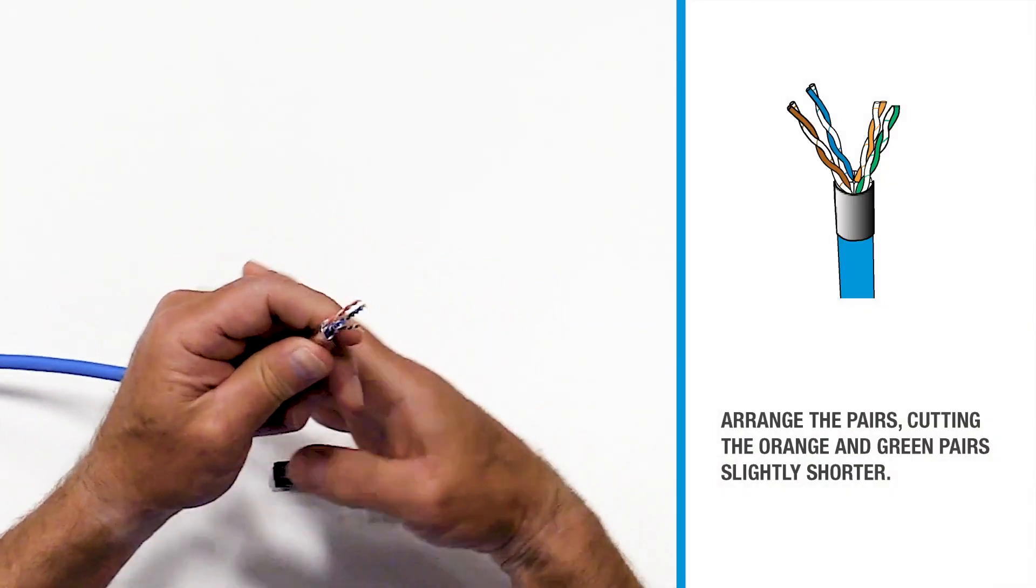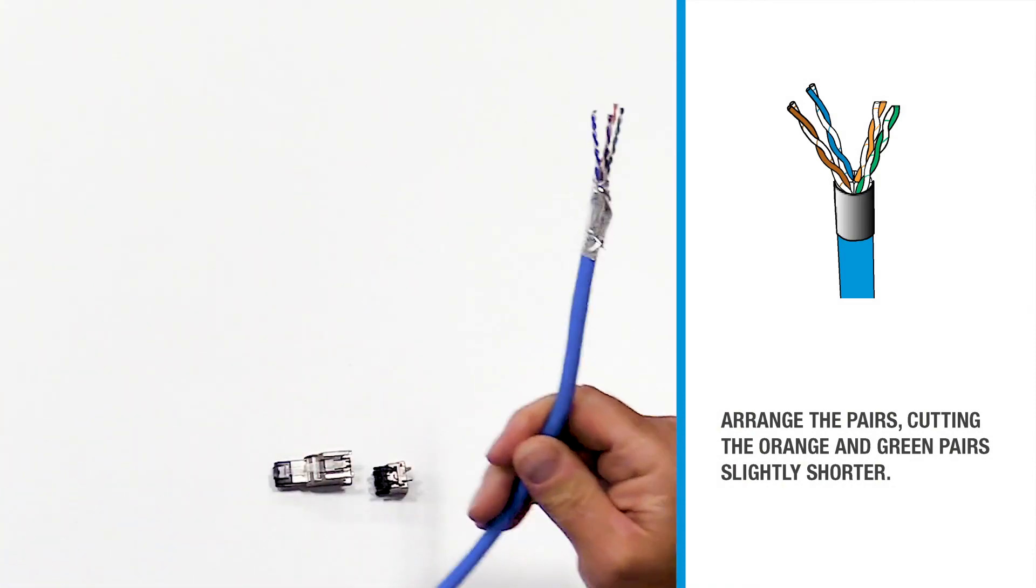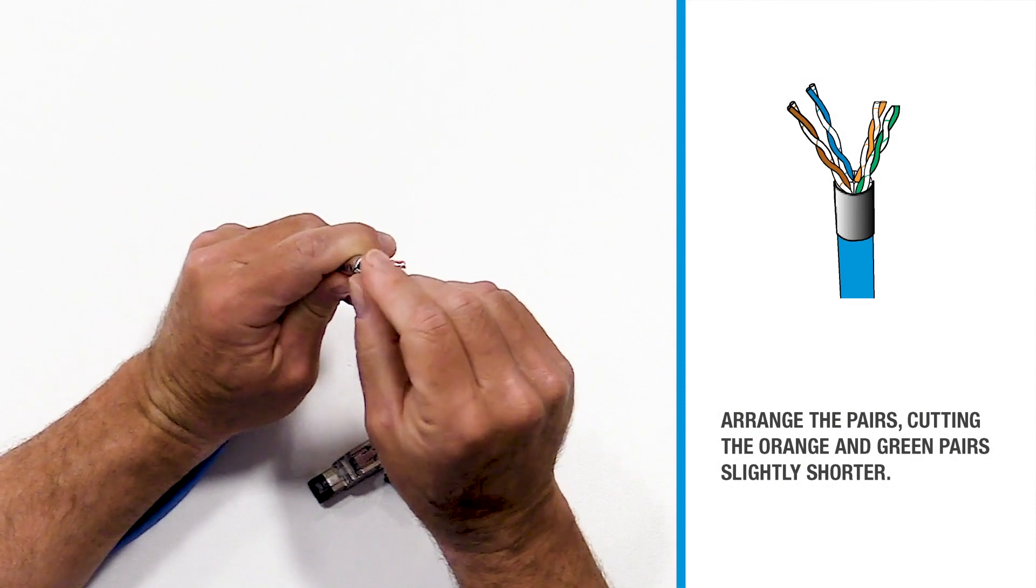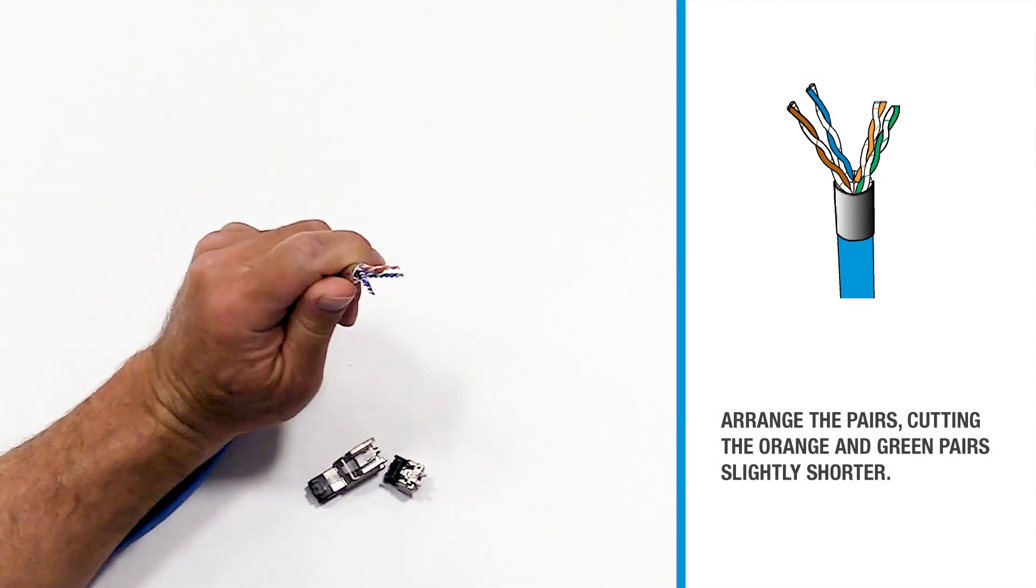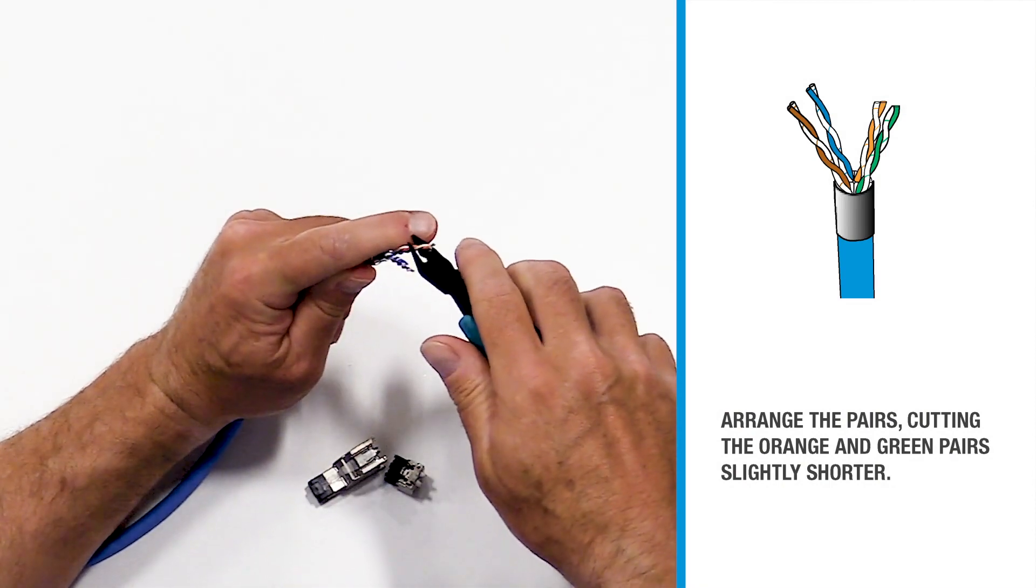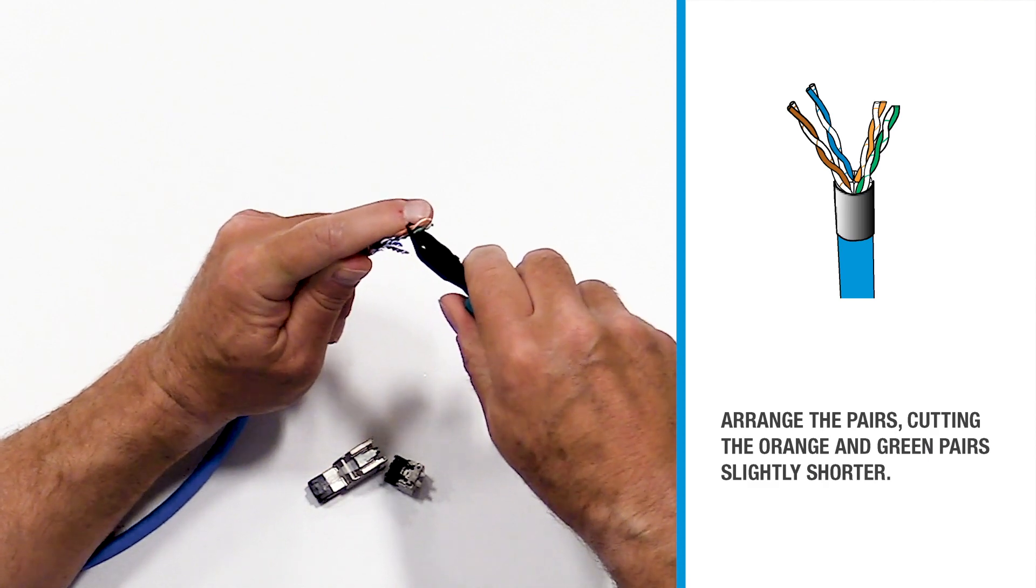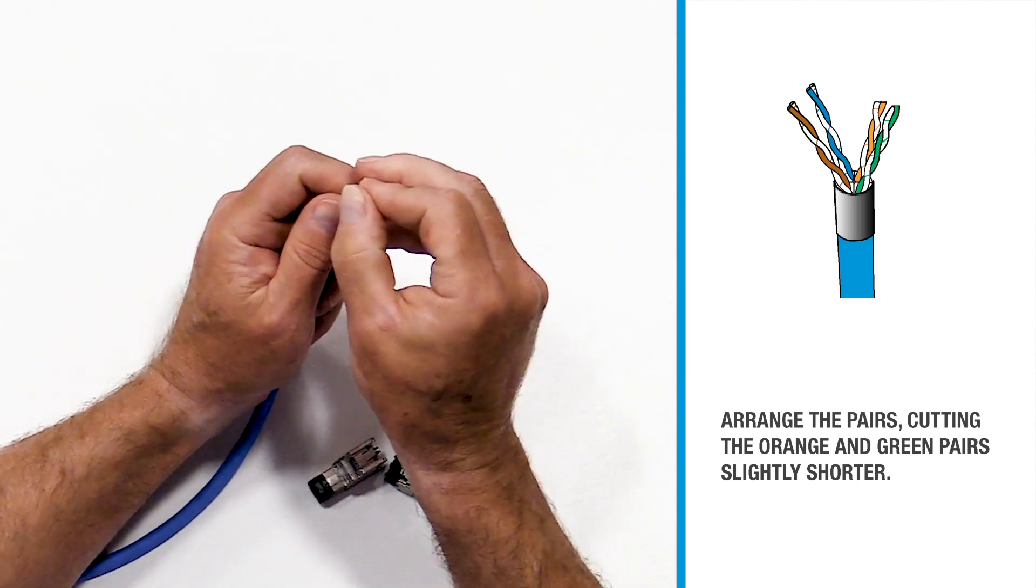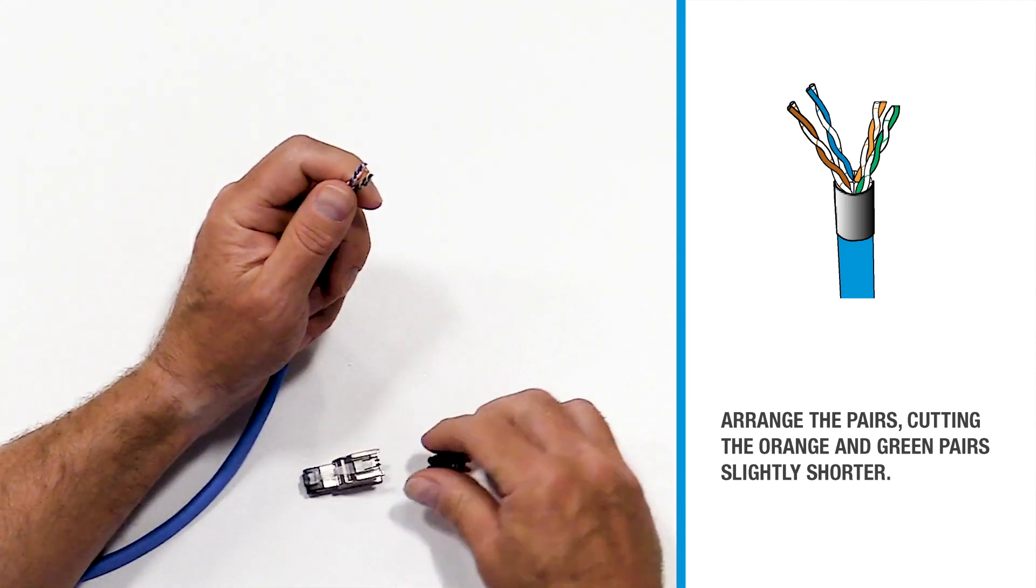Arrange your pairs as so. Cut the orange and the green pair a little bit shorter than your blue and brown pair. It will make it easier to insert the conductors into your wire cap.